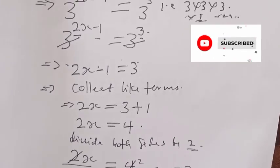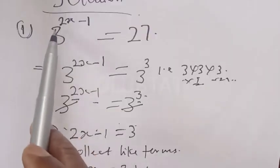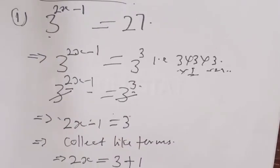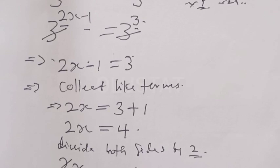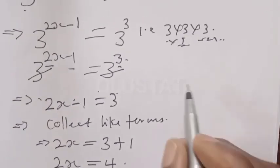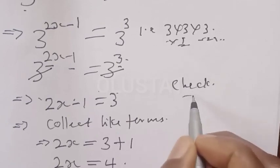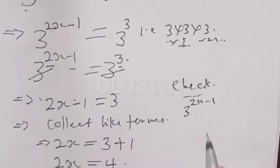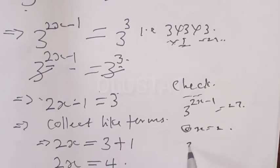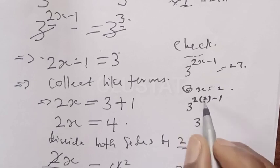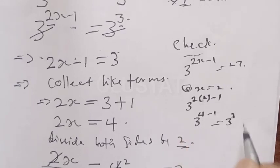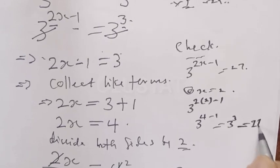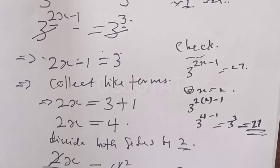You can see that it is very simple. Now let's check if our answer is correct. We said x is equal to 2. The left hand side must equal the right hand side, which is 27. At x equal to 2, we have 3 raised to power 2 times 2 minus 1, that is 3 raised to power 4 minus 1, which equals 3 raised to power 3, and 3 raised to power 3 is equal to 27. Our answer is correct.